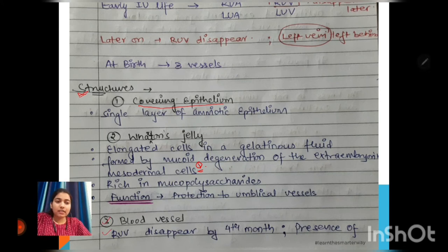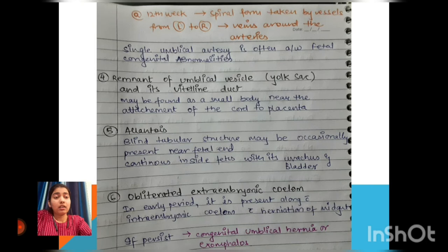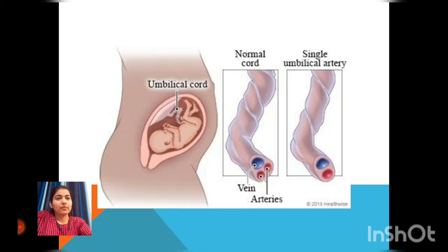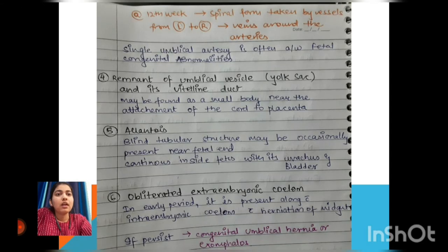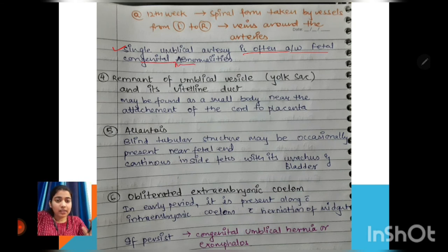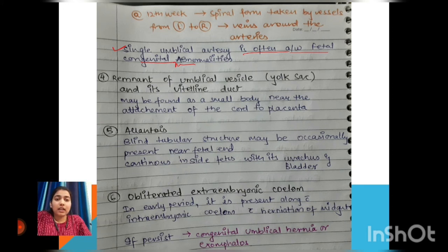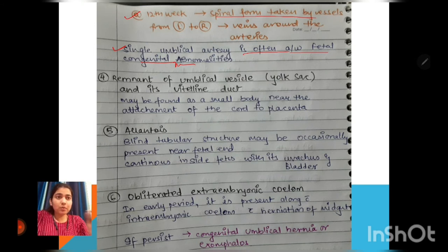As discussed, the right umbilical vein disappears by the fourth month. Persistence of the right umbilical vein may lead to congenital malformations. Additionally, a single umbilical artery is often associated with congenital abnormalities. Normally there are two arteries — right and left — but if only one artery is present, it is suggestive of fetal congenital malformations.